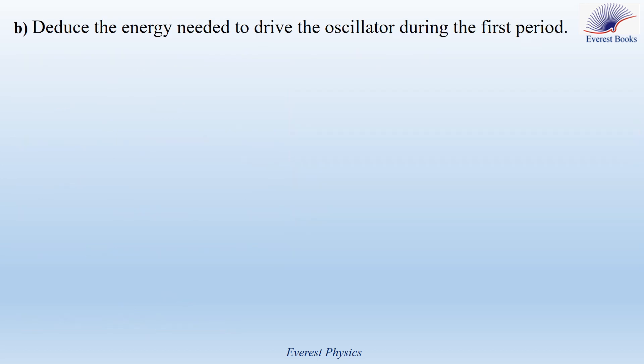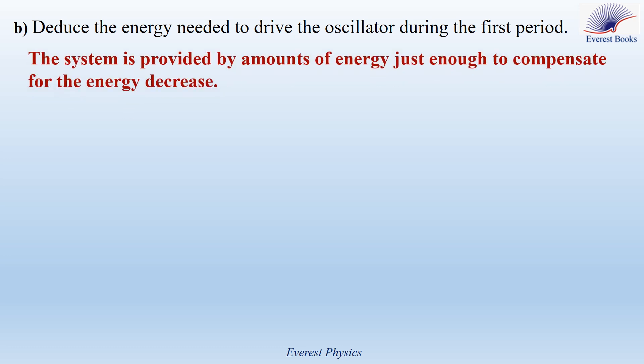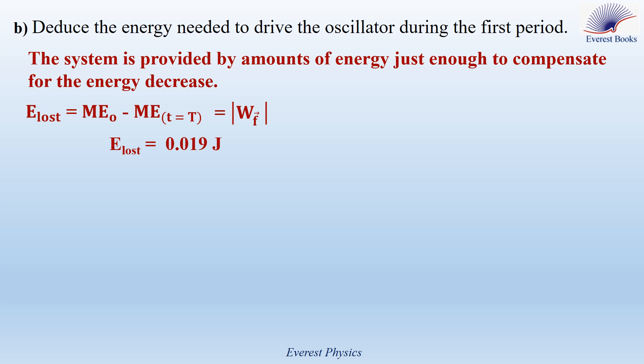Part B: deduce the energy needed to drive the oscillator during the first period. In driven oscillations, the system is provided with energy just enough to compensate for the energy decrease. The energy lost during the first oscillation equals the absolute value of the work done by friction = 0.019 joules. Therefore, the driving energy equals 0.019 joules.